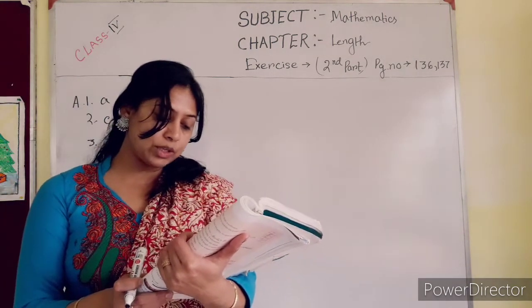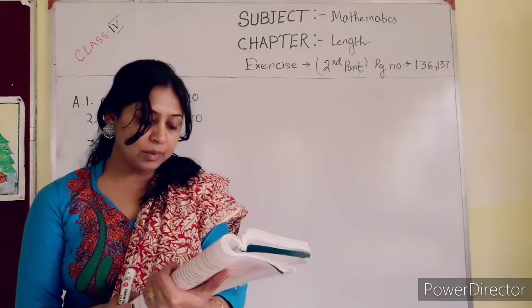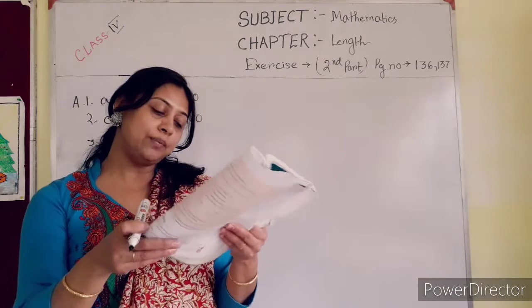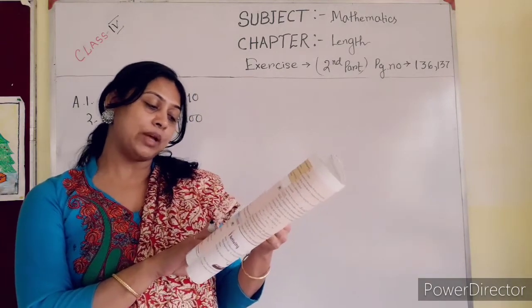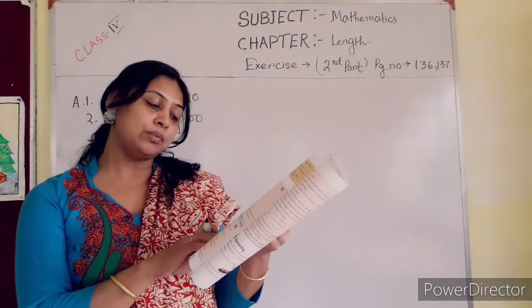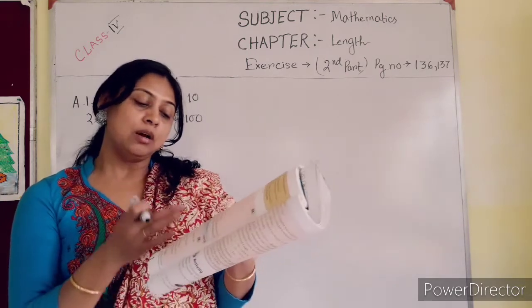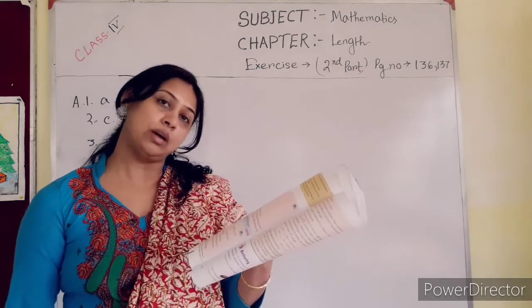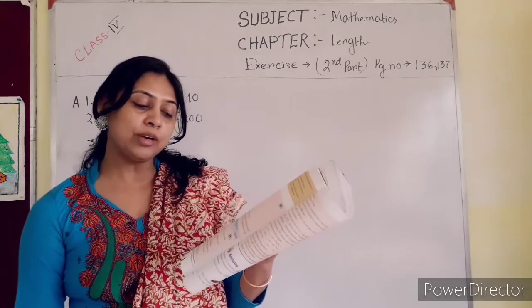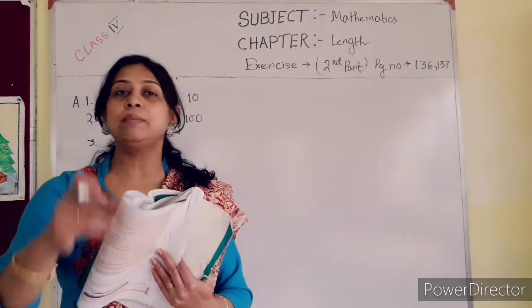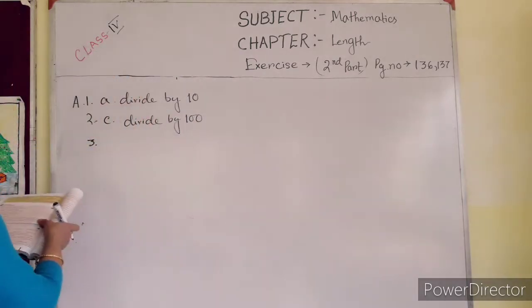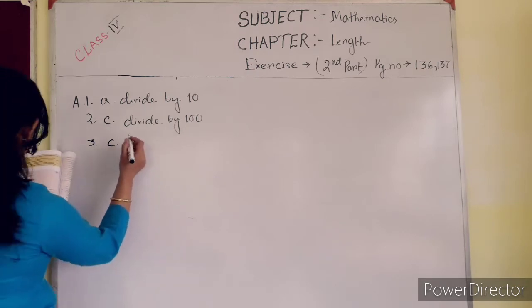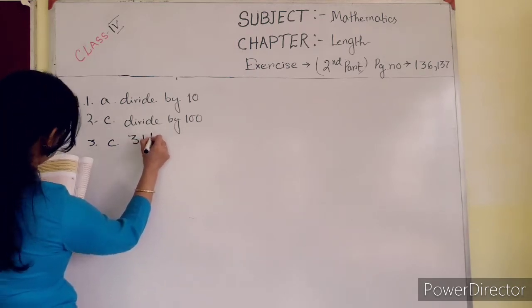Sum of 10 km 400 m and 20 km 700 m rounded to the nearest kilometer. For rounding to the nearest kilometer, first you have to convert 10 km 400 m into approximately kilometers. So it is less than 500, so 10 km 400 m approximately 10 km, and 20 km 700 m approximately 21 km. So 10 plus 21 km equals 31 km. Answer C is correct. 31 km.